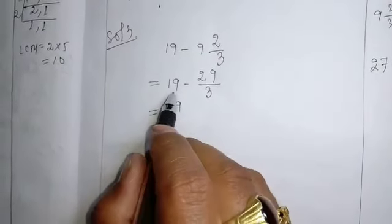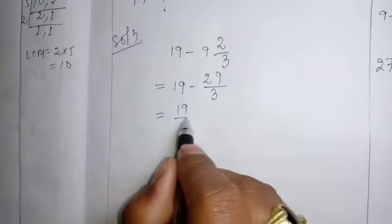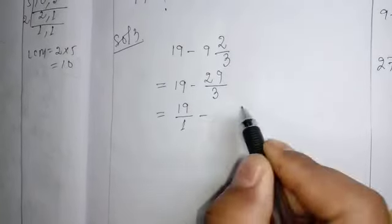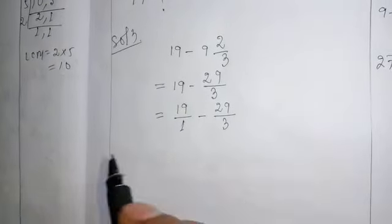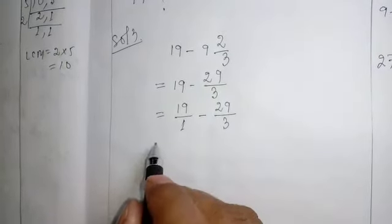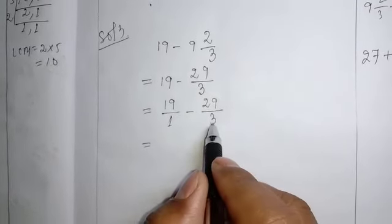Here, there is no any denominators. If there is no any denominator, we have to know that there is denominator 1. For our understanding, better we write 1. Then we will find out the LCM 1 and the 3 LCM will be 3.